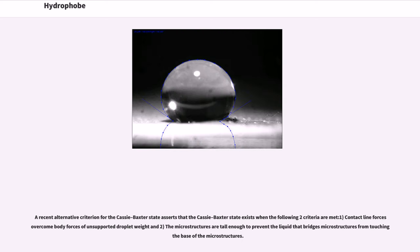A recent alternative criterion for the Cassie-Baxter state asserts that the Cassie-Baxter state exists when the following two criteria are met: one, contact line force overcome body forces of unsupported droplet weight; and two, the microstructures are tall enough to prevent the liquid that bridges microstructures from touching base of the microstructures.